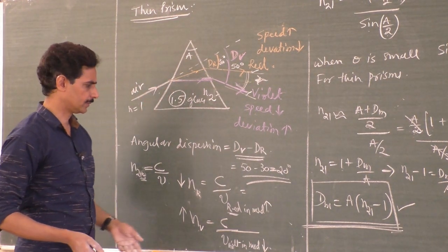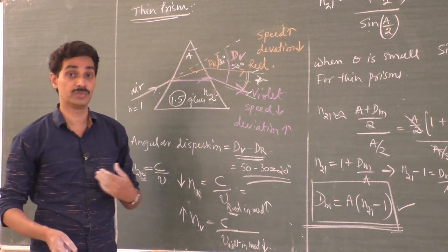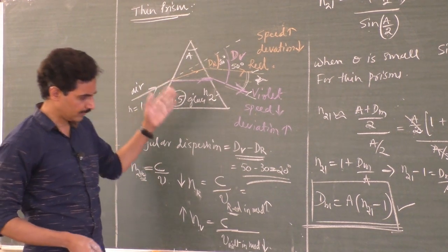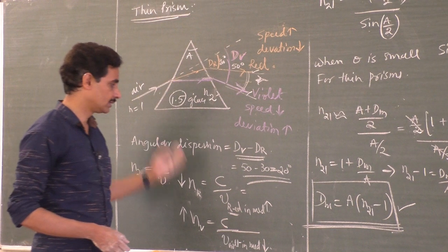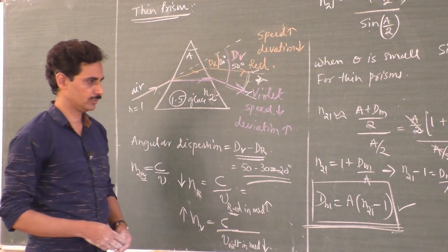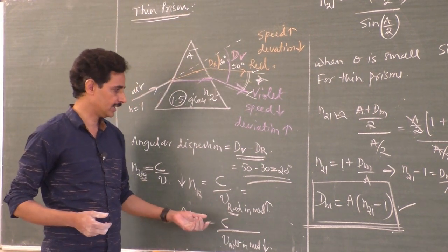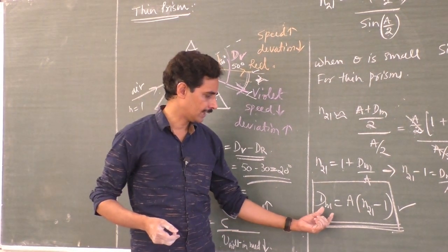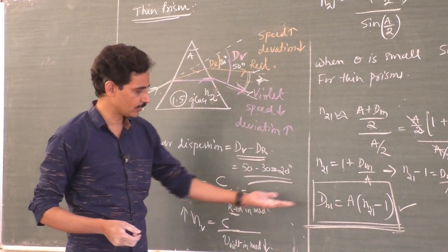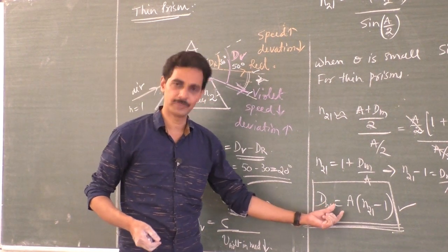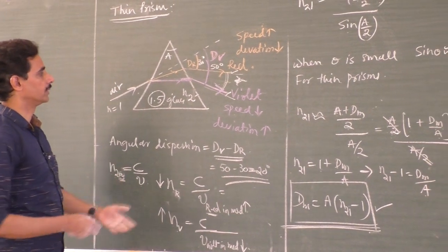For extreme colors: violet — least velocity, most refractive index, most bending. Red — more velocity, least deviation, least refractive index. The angle of minimum deviation for a thin prism doesn't depend on the angle of incidence. Whatever be the angle of incidence, the angle of deviation will be almost the same. There won't be much difference. So this is how we use thin prism — scientists use thin prisms so that they get the angle of deviation very easily.